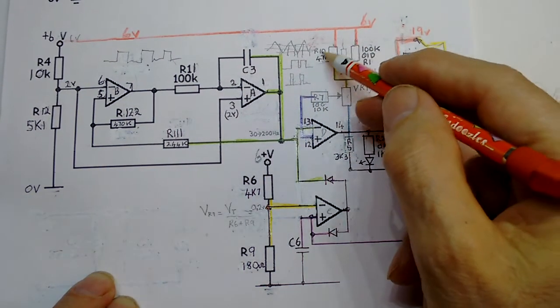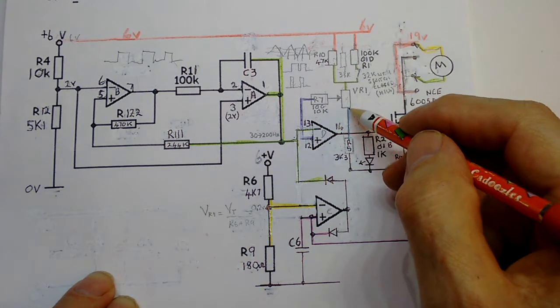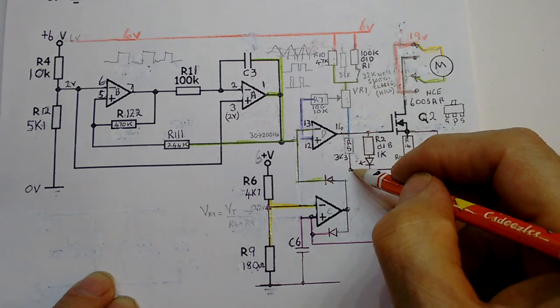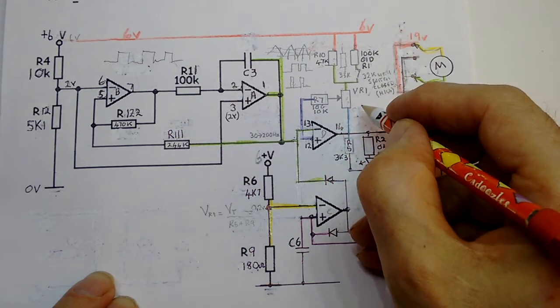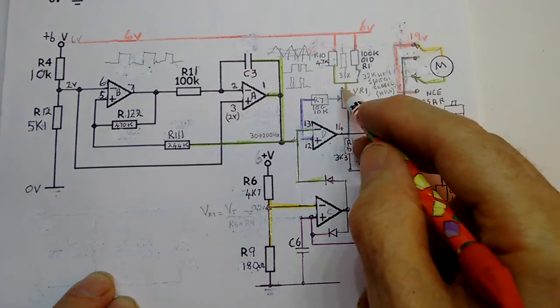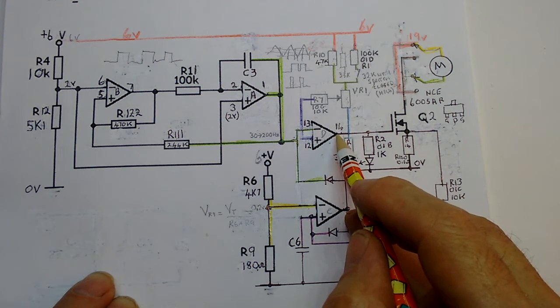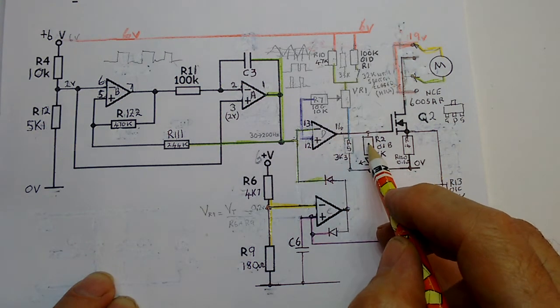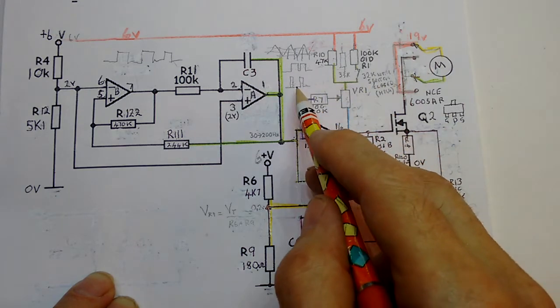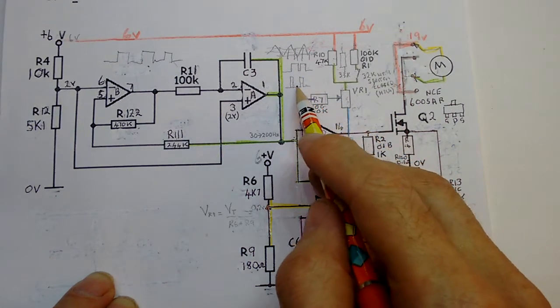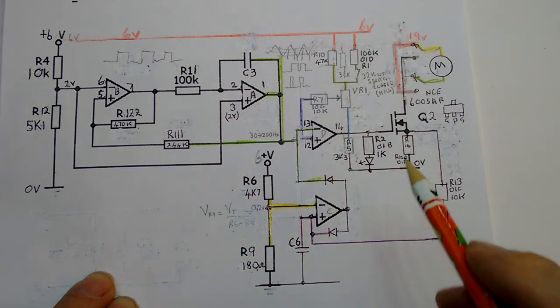This bottom of the variable resistor comes down to 0 volts via this 3k3 resistor. The output of this final op amp then goes to the LED via this resistor here and then into the FET to switch on and off the motor. So the motor has been switched on and off very fast at the same frequency but for different times, depending upon where we put the variable resistor.